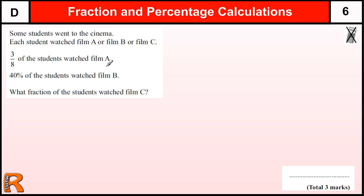Now, I could do this purely as a fraction question by converting 40% into a fraction. 40% is 40 out of 100, which is 4 out of 10, or 2 out of 5. So, we've got three-eighths watched film A, two-fifths watched film B.